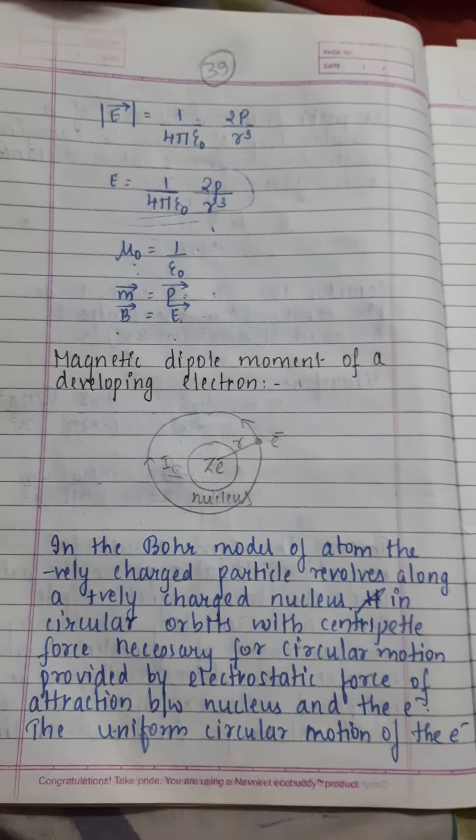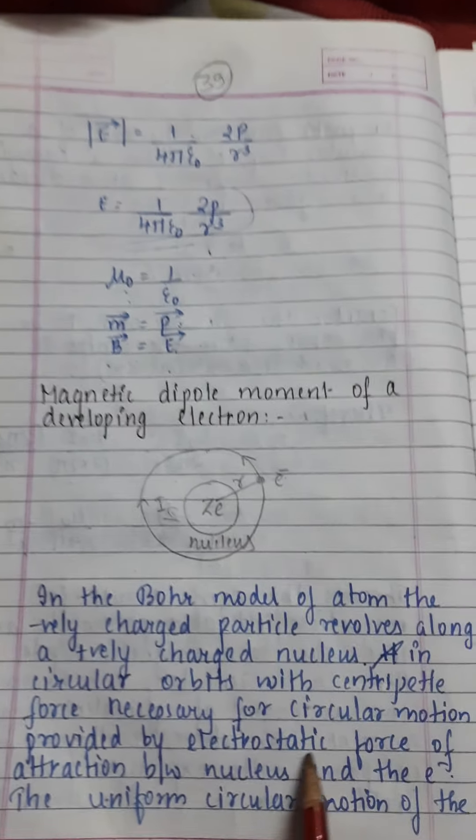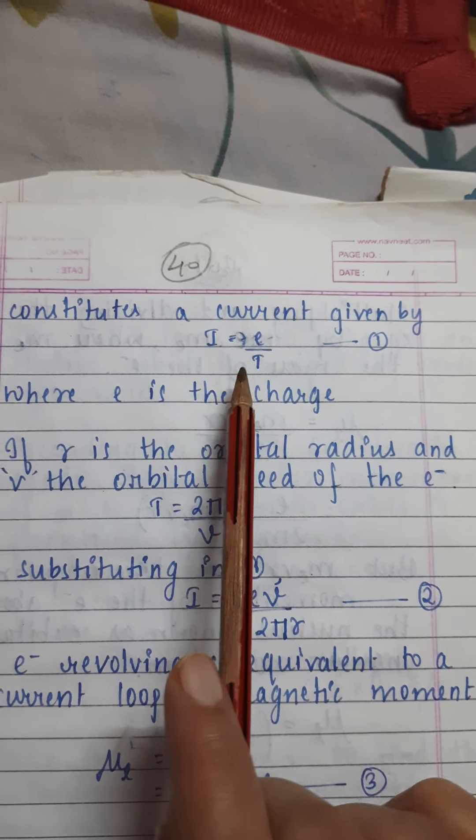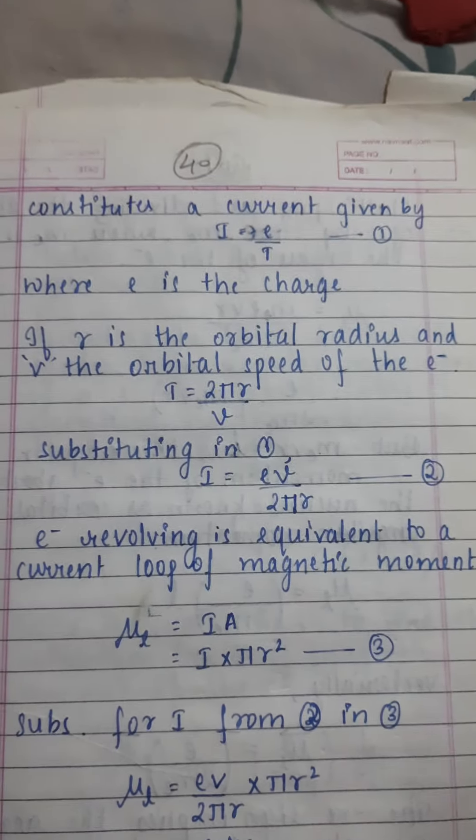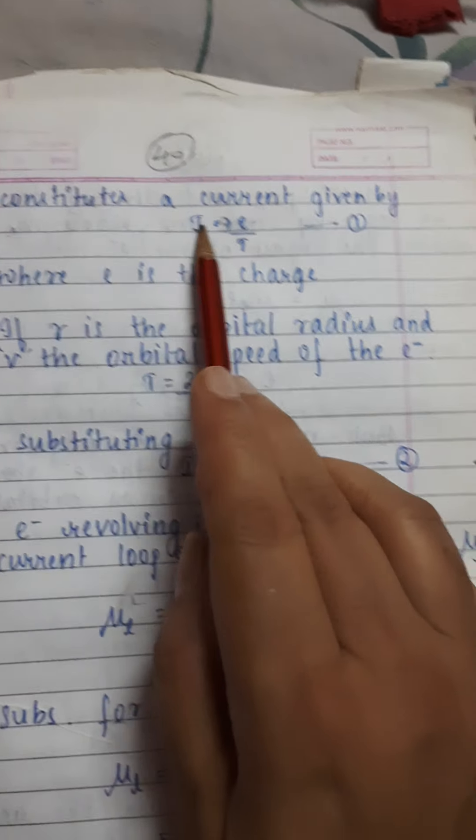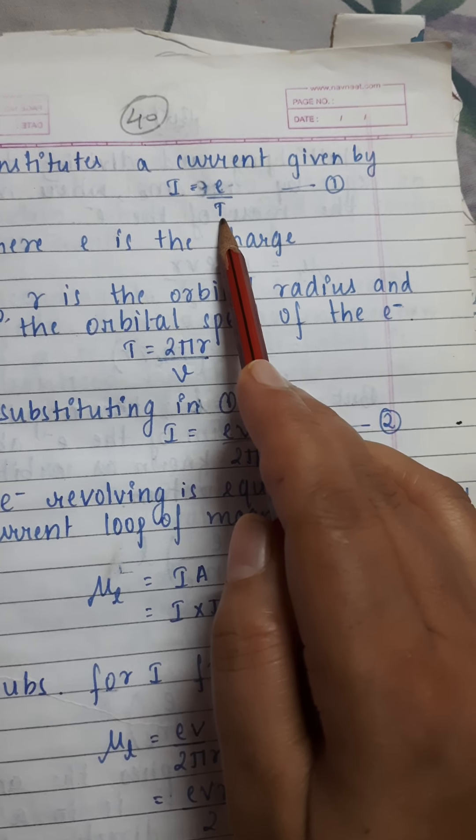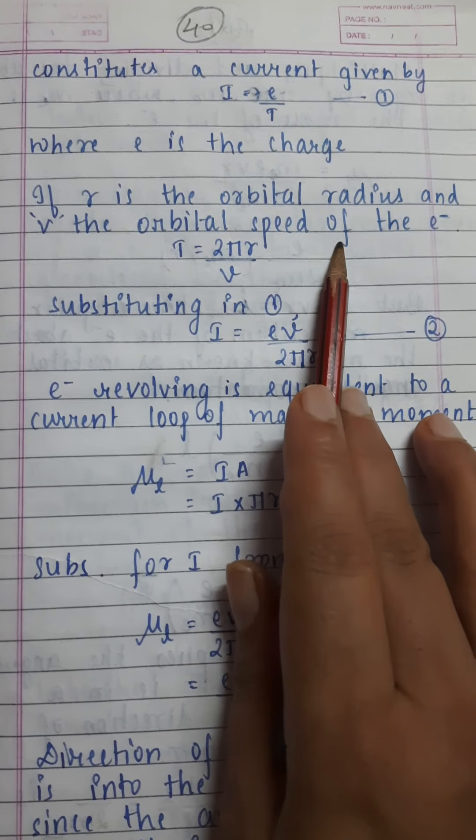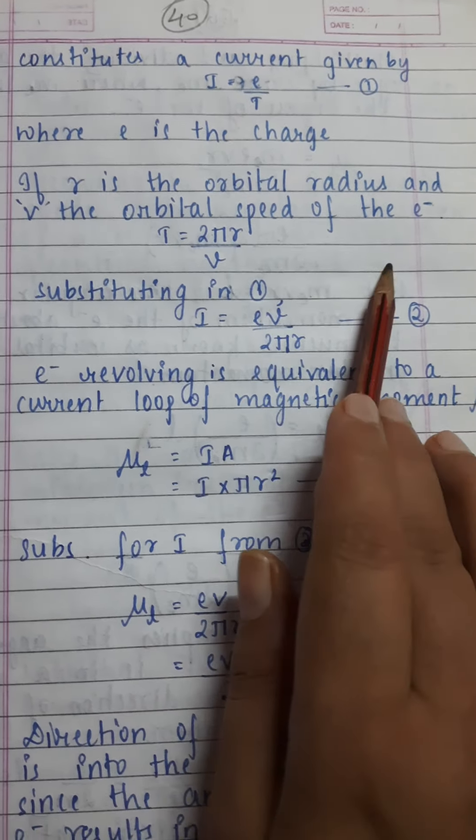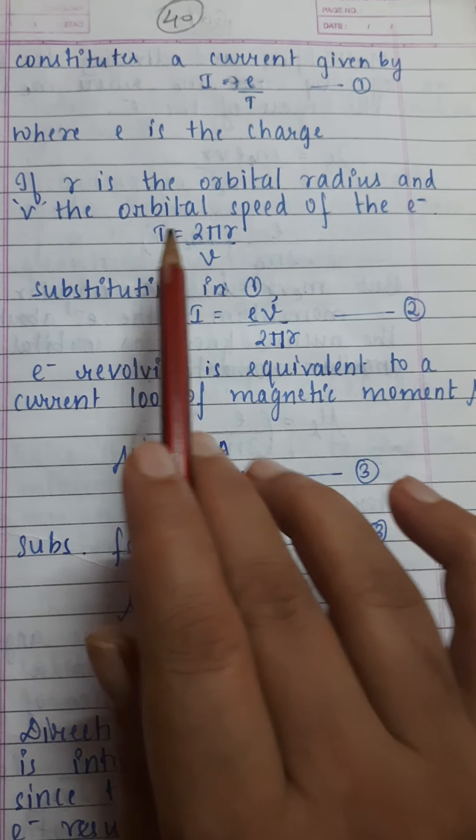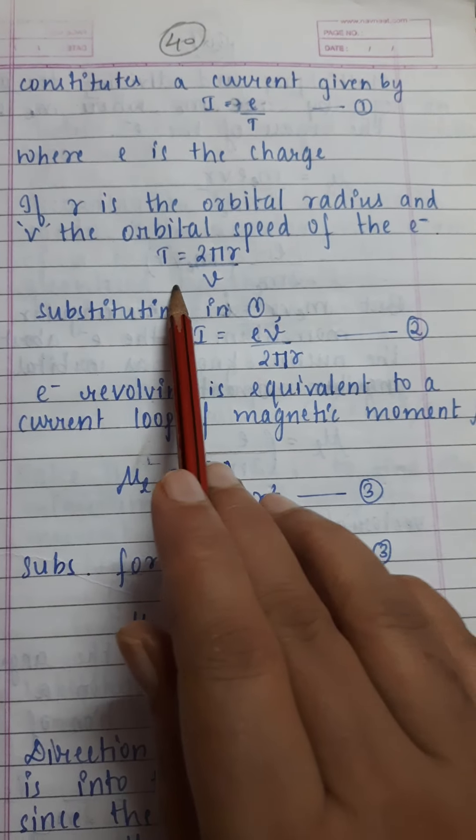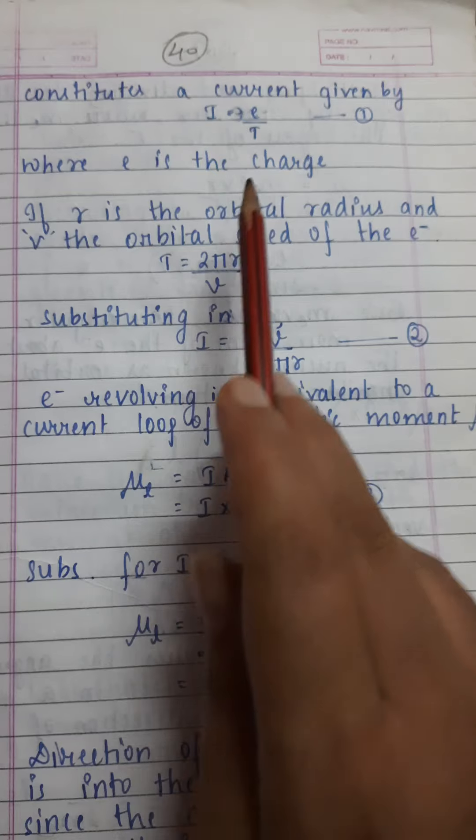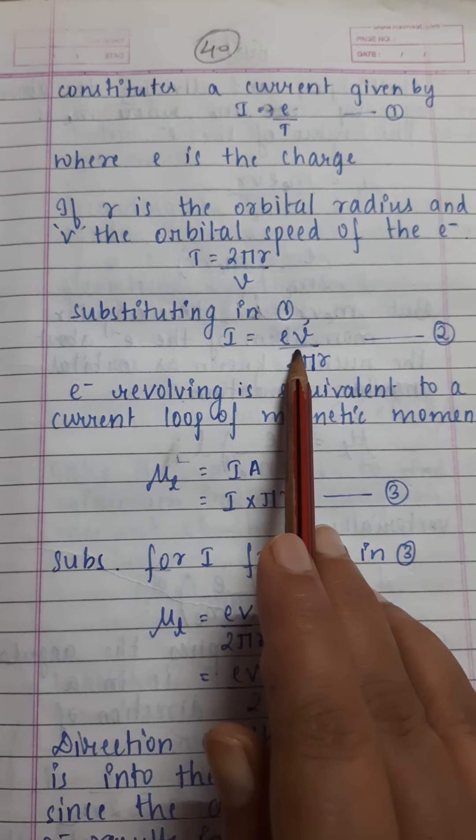The uniform circular motion of the electron constitutes a current given by i equals e by t. If the electron moves, current is produced - current is charge by time, charge is e, so e by t is the current. If r is the orbital radius and v the orbital speed of the electron, substituting in the first equation you will get i equals ev by 2πr.